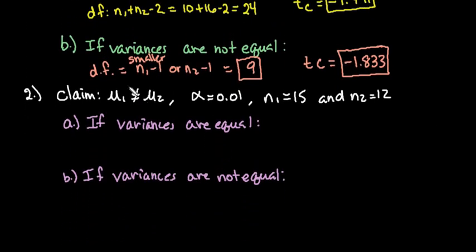Let's look at a second one. For this one, our claim this time is that they are not equal, which this tells us that it's a two-tail test. So we do have to report both the positive and the negative t-scores. For this one, we are going to be looking for alpha of 0.01. And we're going to look at both situations.